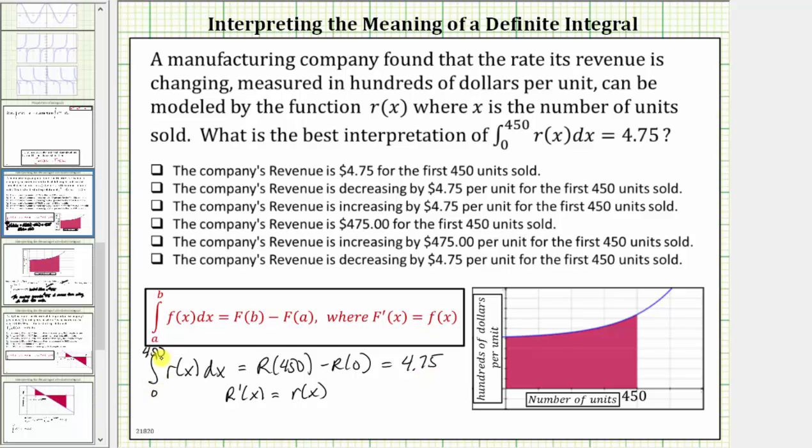4.75 does give us the total revenue from selling the first 450 units. And again, we know this is 4.75 hundred dollars, which we already know is equal to 475 dollars.